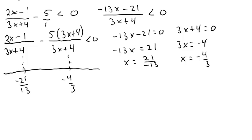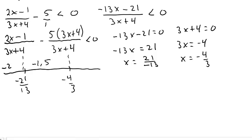We choose a number from each region. Negative 21 over 13 is approximately negative 1.6 and negative 4 thirds is approximately negative 1.3. So I'll choose negative 2 for the left region, negative 1.5 for the middle region, and 0 for the right region.